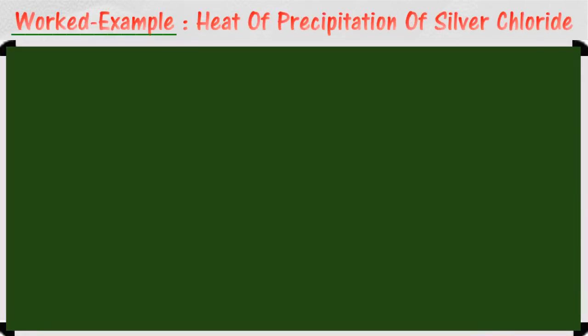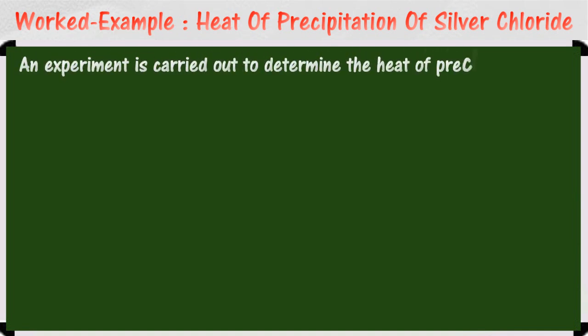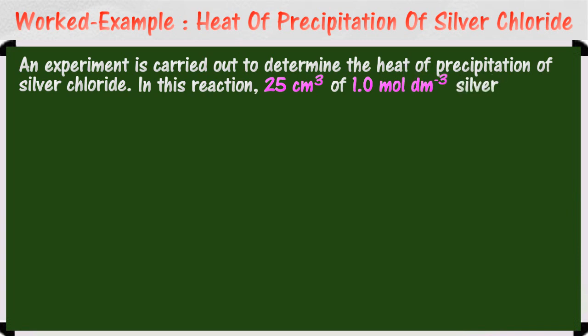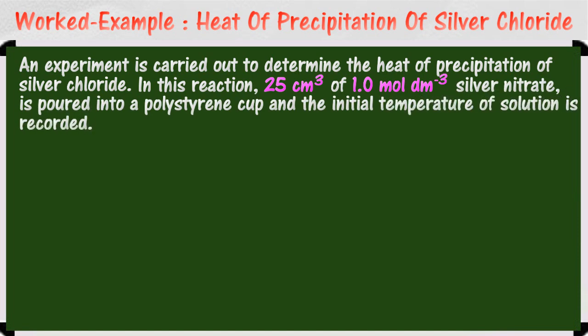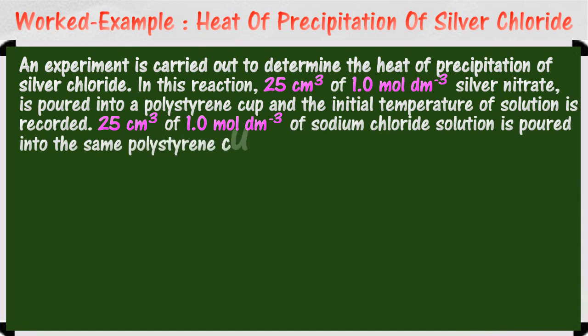Here are the steps in calculating the heat of precipitation of silver chloride. An experiment is carried out to determine the heat of precipitation of silver chloride. In this reaction, 25 cm³ of 1.0 molar silver nitrate is poured into a polystyrene cup, and the initial temperature of solution is recorded.